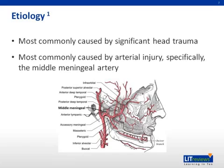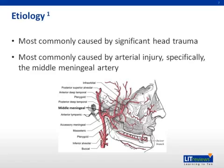There are other causes of epidural hematomas besides traumatic arterial injury. Less common is a bleed from a venous source, for example a dural sinus tear. Additionally, an epidural hematoma can arise from non-traumatic etiologies including coagulopathies, vascular anomalies, hemorrhagic tumors, infections, and iatrogenic causes.